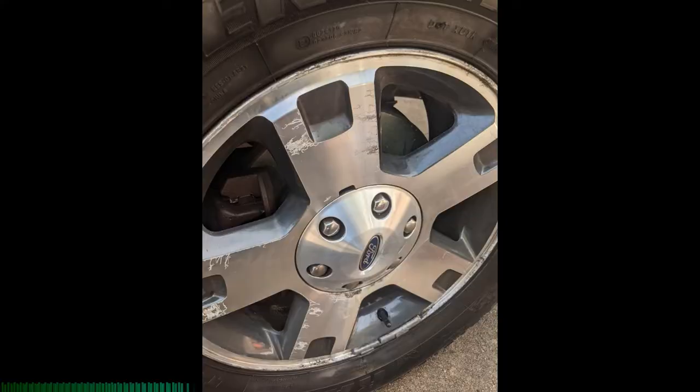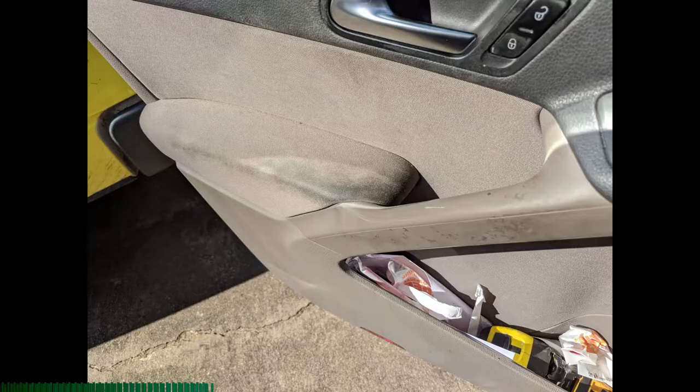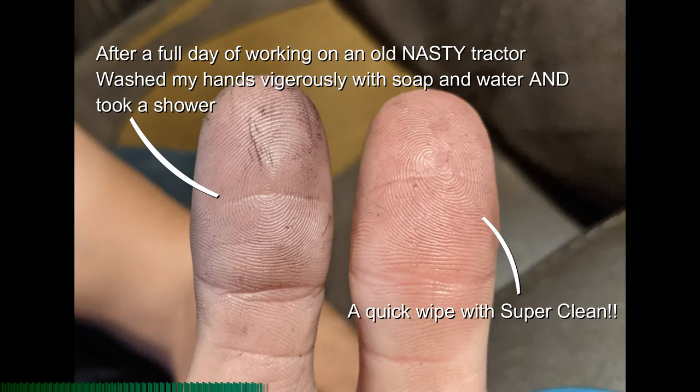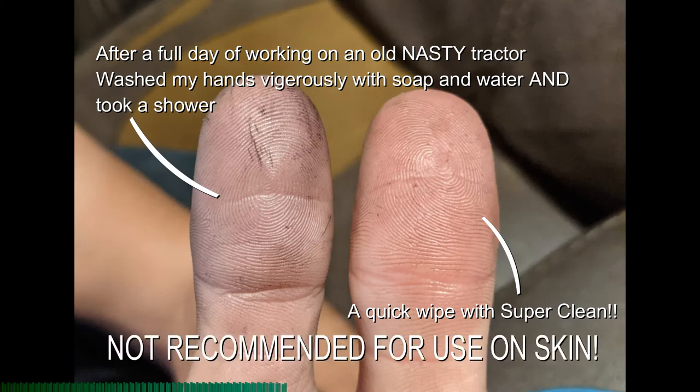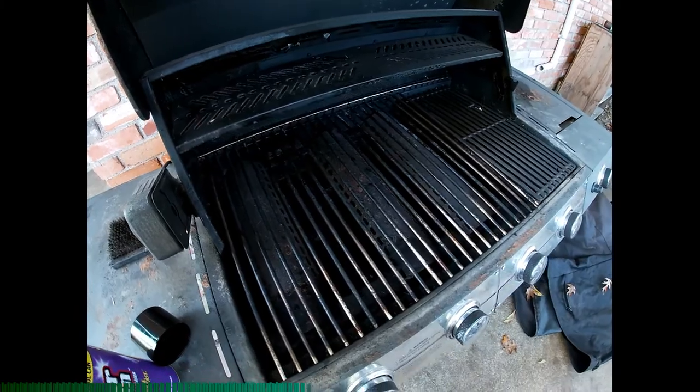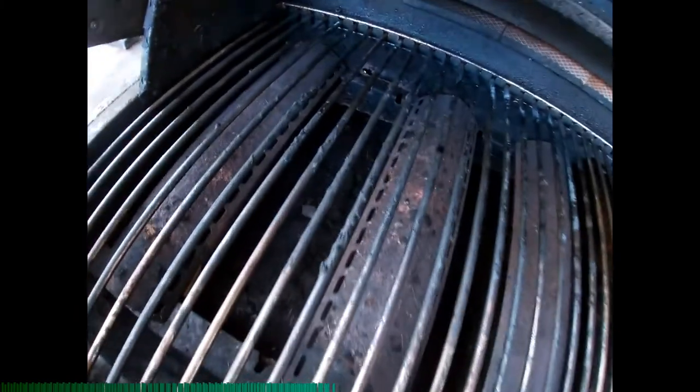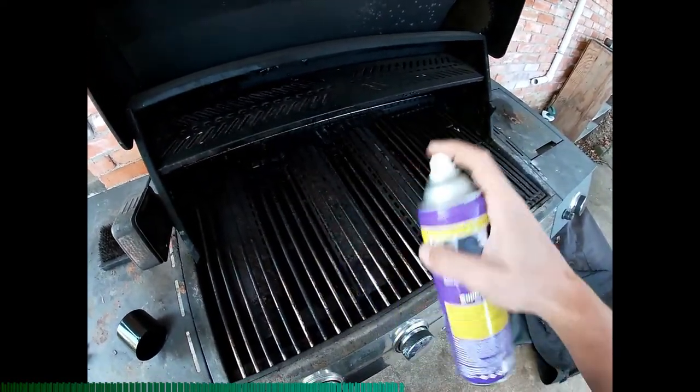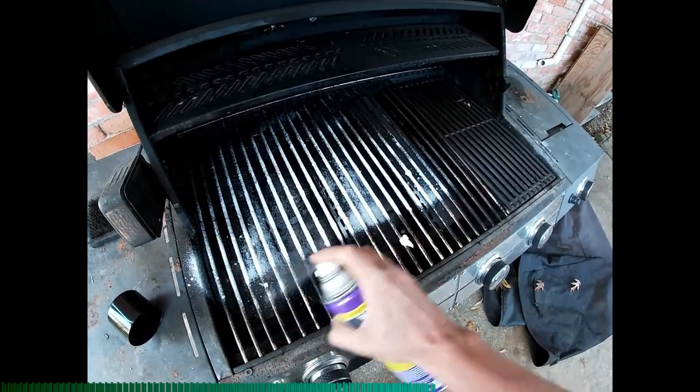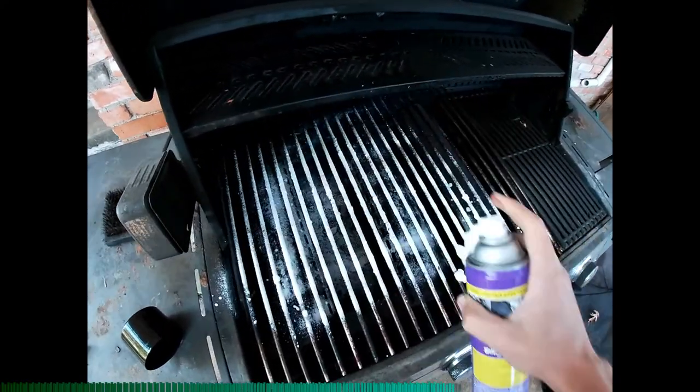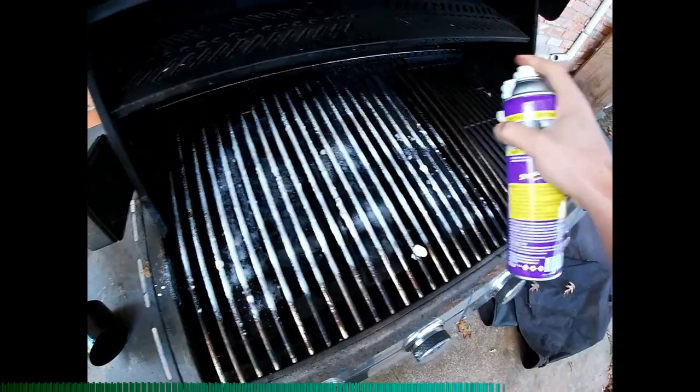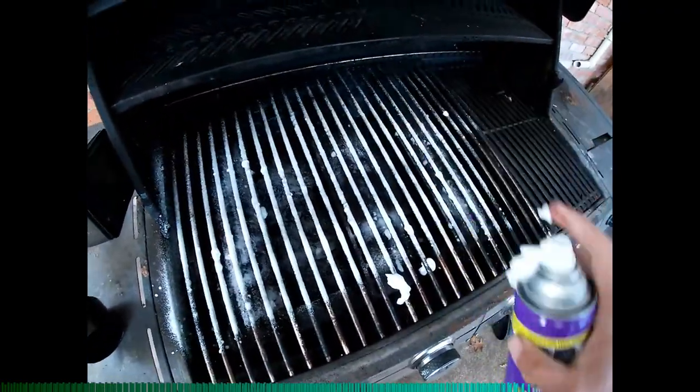They've got a foaming aerosol can that works really well for the grill and outdoor stuff that you really want to stick all over and degrease everything. And then they've got the regular spray that you can use in the kitchen, in the bathroom, and out in the garage. I think we're all guilty of not cleaning our grill enough. This is pretty caked on, nasty, greasy junk. So we're going to take their Super Clean aerosol spray, and it just foams up and sticks to all that nasty grime and grease.